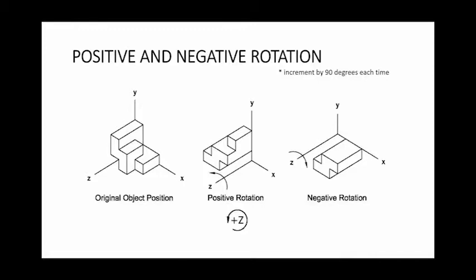The way that we notate that is with a positive z symbol surrounded by an arrow rotating counterclockwise. A negative z rotation or a rotation around the z-axis that decrements 90 degrees is represented by a negative z symbol with a clockwise arrow surrounding.